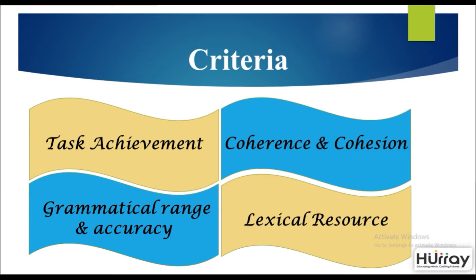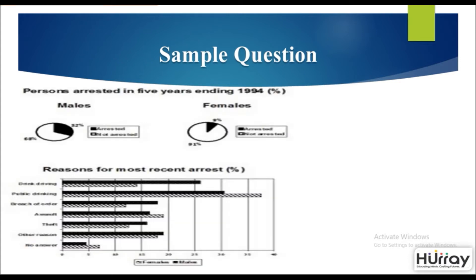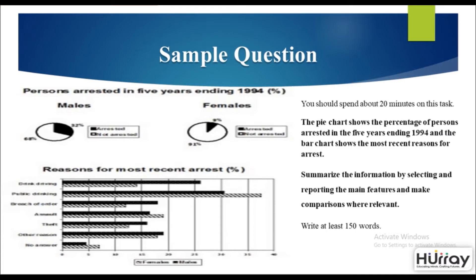Here is a sample question. At the top you have a pie chart depicting persons arrested in the five years ending 1994, divided into males and females. Below that is a bar graph detailing the reasons for the most recent arrest. The pie chart has two divisions with percentages, while the bar graph has many more components.